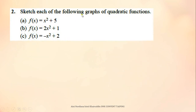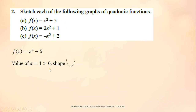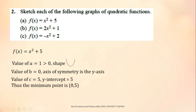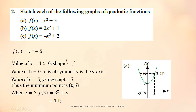Question number 2: Sketch each of the following graphs of quadratic functions. The value of A is equal to 1, so we get a U-shape graph. Since B equals 0, the axis of symmetry is the y-axis. The value of C is 5, so the y-intercept is 5. Thus, the minimum point is (0, 5). Choose one value for x and substitute into the function to get the value of y. This is how your graph will look like, with the minimum point shown.